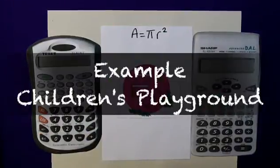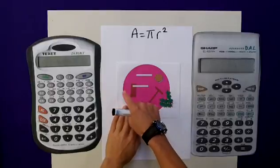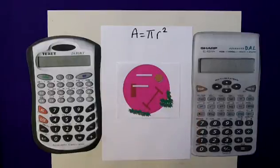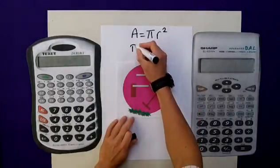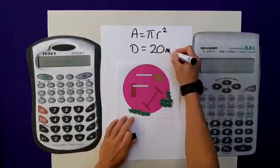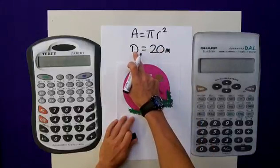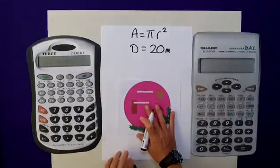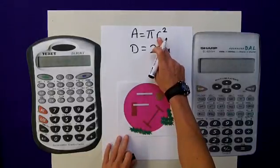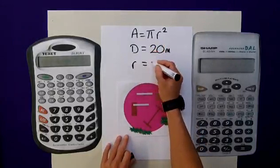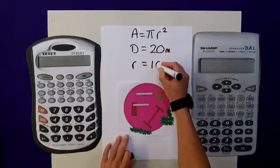The dimension I've been given for this project is that the diameter, the distance across the centre of this circle, is in fact 20 metres. Now, I need to remember that the diameter is twice the radius, and it's the radius that I need for my calculation. So the radius is actually half of this, so that would be 10 metres.